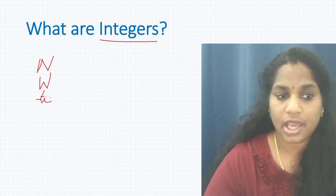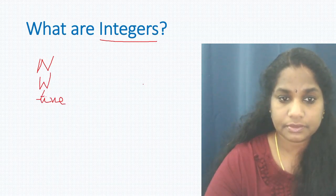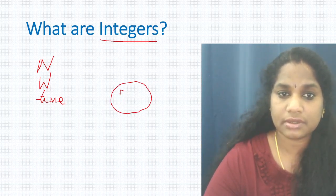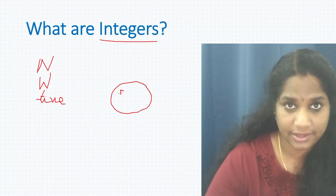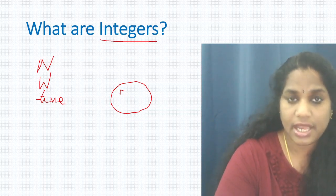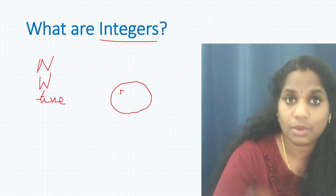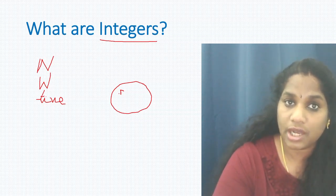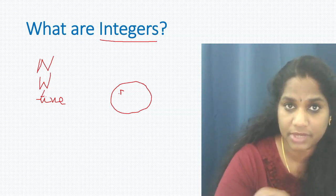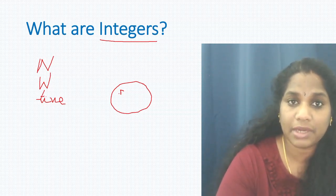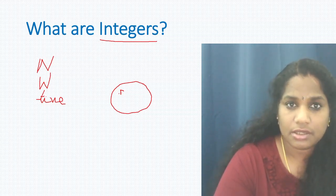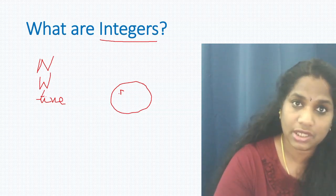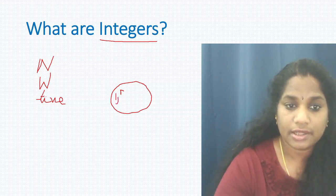Let us make a small Venn diagram. Natural numbers are the numbers which we use to count anything — one cup of water, three books, two cups. These numbers are used to count something, so they fall under natural numbers. Can you use zero to count anything? No, so zero is not a natural number. The smallest natural number is one.